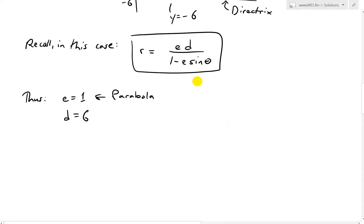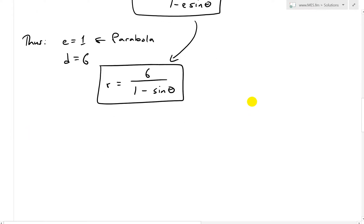Thus, what we end up having is this becomes r equals to e is 1, and then d is 6, 6, 1 minus e is 1, and then sine theta like that. And this is, in fact, a problem. And now if we were to graph this out, let me just erase here and keep erasing. So let's move this up here.